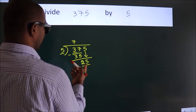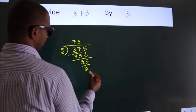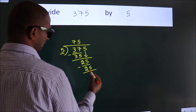When do we get 25? In 5 table. 5 5s 25. Now we subtract. We get 0.